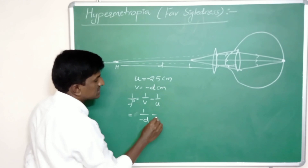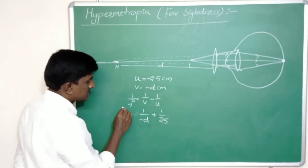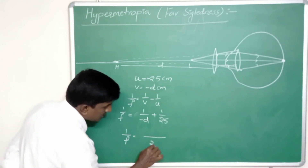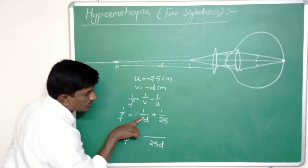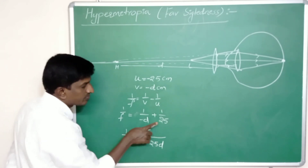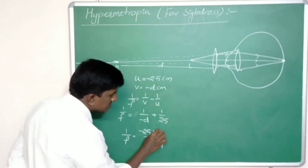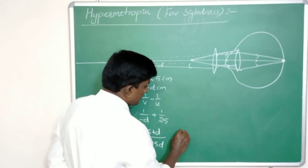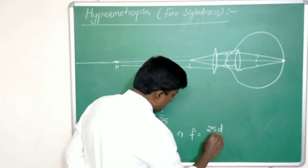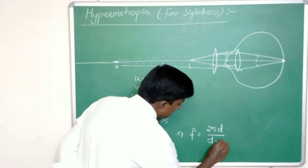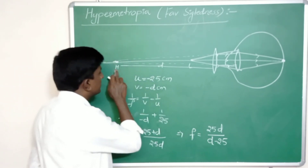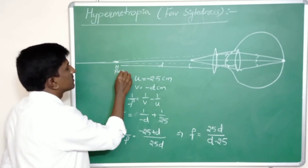From the lens formula, 1/f = 1/v − 1/u, substituting: 1/f = 1/(−d) − 1/(−25) = −1/d + 1/25. Taking the LCM of d and 25: 1/f = (−25 + d) / (25d). Inverting, the focal length f = 25d / (d − 25).